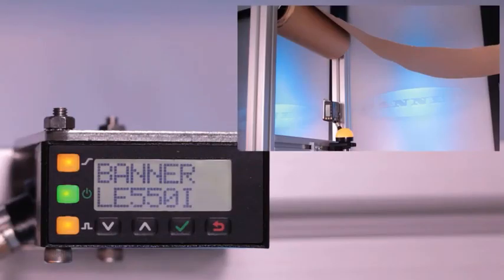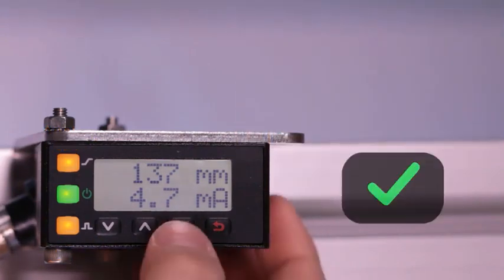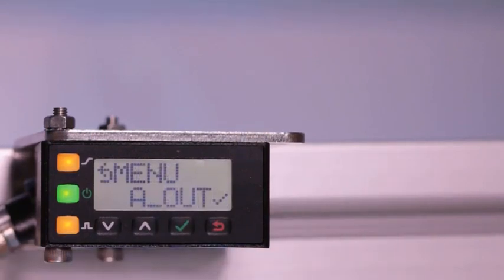When first powered on, the LE begins in run mode, displaying the present distance and analog measurement. Click the enter button to access the sensor menu. The first option within the sensor menu is the analog output submenu.